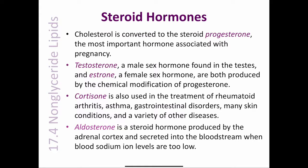Many steroids, including progesterone, have played important roles in the development of birth control agents. 19-nor-progesterone was one of the first synthetic birth control agents, approximately 10 times as effective as progesterone in providing birth control. However, its utility was severely limited because this compound could not be administered orally and had to be taken by injection.